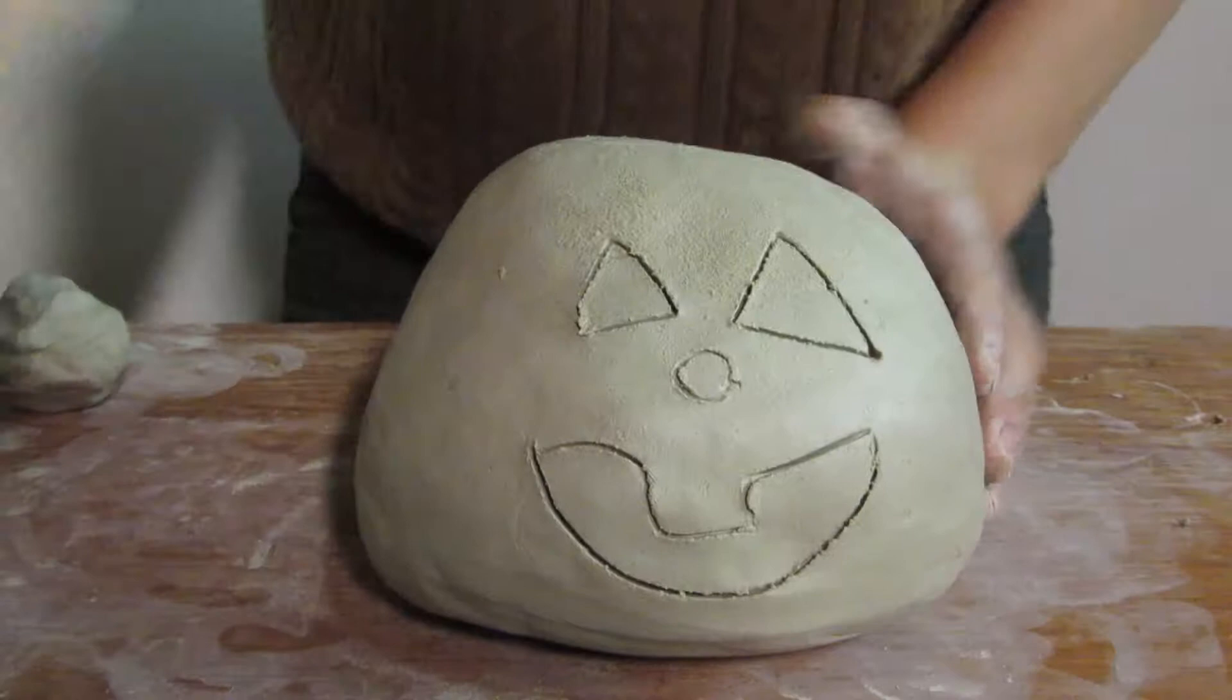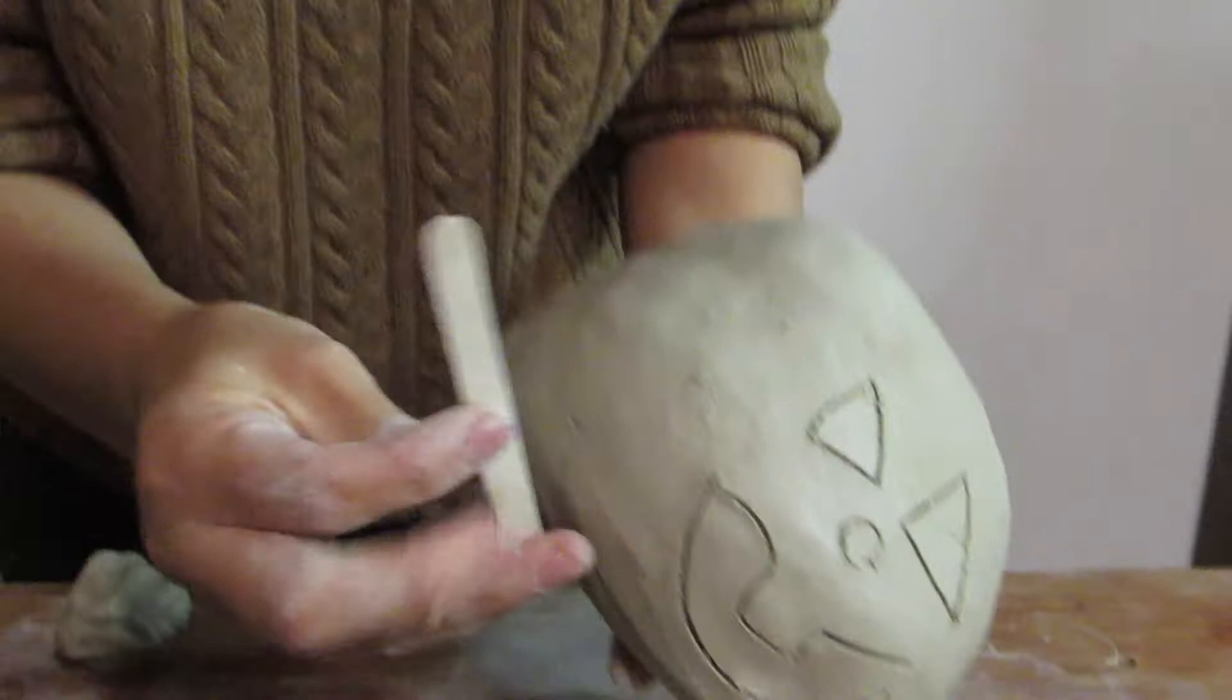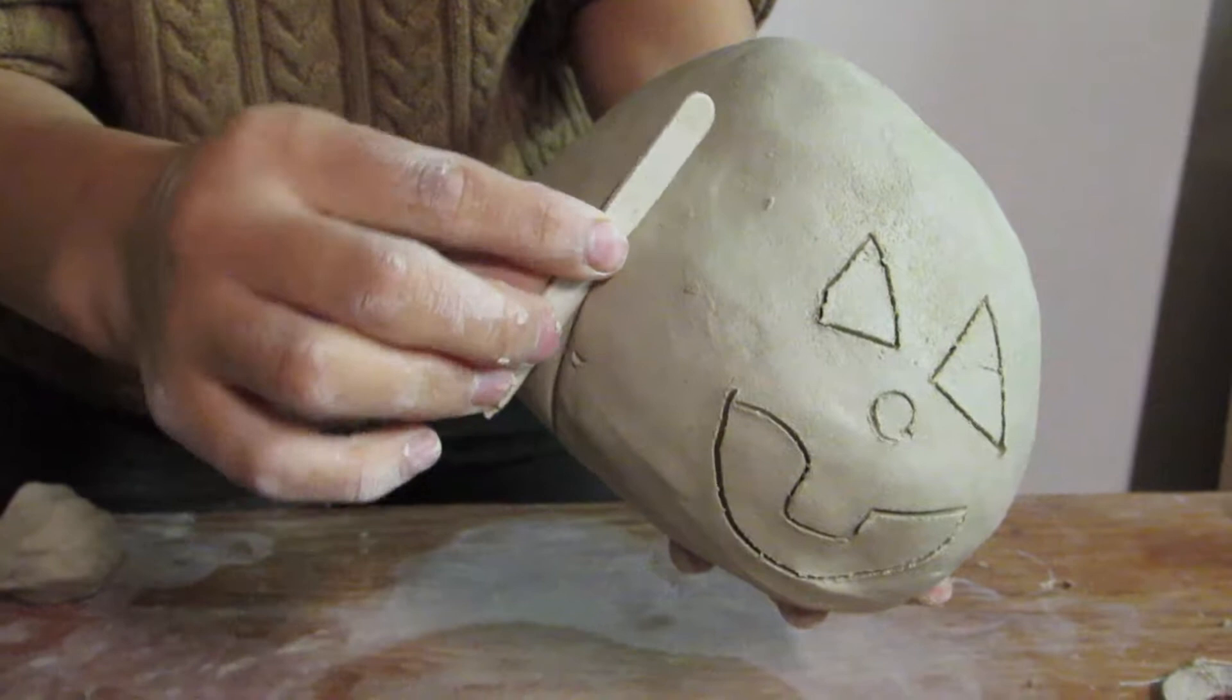So after making a silly face, you want to use a popsicle stick to give it the pumpkin design. So we're going to use the side of the popsicle stick, put it against the clay and go all around to the top. So you want to do this all around the pumpkin.